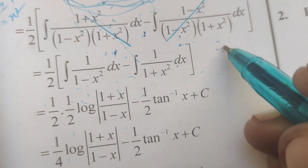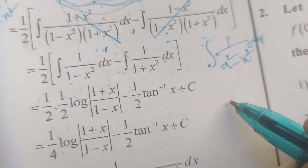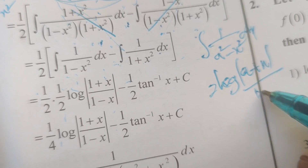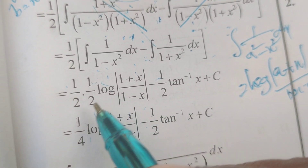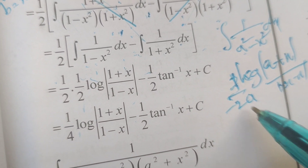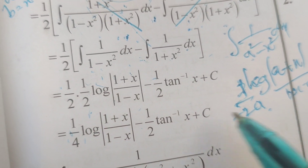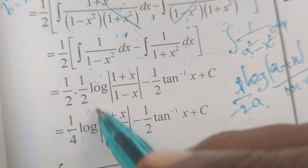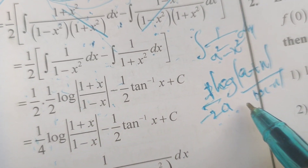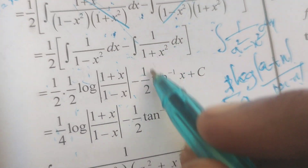Applying the formula: integral of 1 by a squared minus x squared dx equals 1 by 2a times log of mod of a plus x by a minus x. Here a equals 1, so we get 1 by 2 into 1 by 2 times log of 1 plus x by 1 minus x.